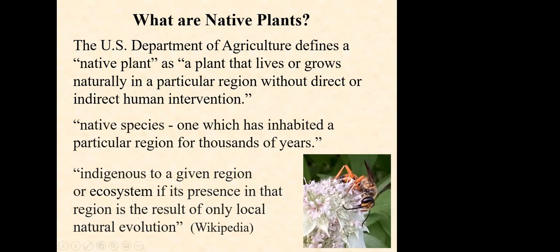I picked a couple definitions of what native plants were off the internet, because everybody has a little bit of a different idea. When I think native plants, I generally think of plants that have been growing in an area — let's say after the last ice age — up until we had European settlers coming into the United States. So anything that was here prior to colonists bringing their own plants over from Europe — those are plants that have grown and evolved in this area without human intervention. These are the straight species of native plants. The native plants in our areas have also evolved with our native wildlife, such as insects, butterflies, or birds, so there's that co-evolution, that dependency on each other.